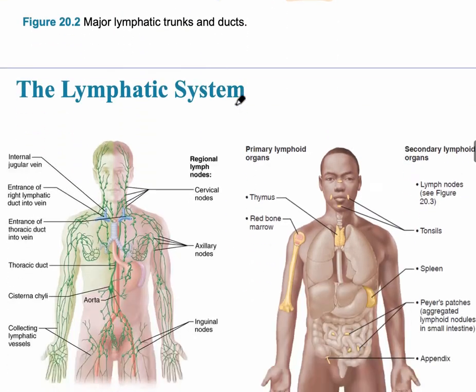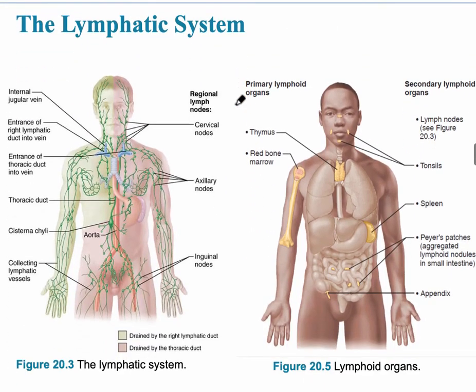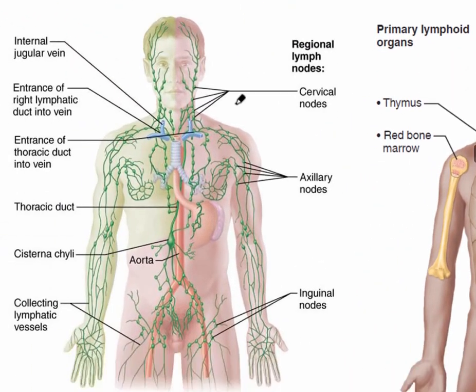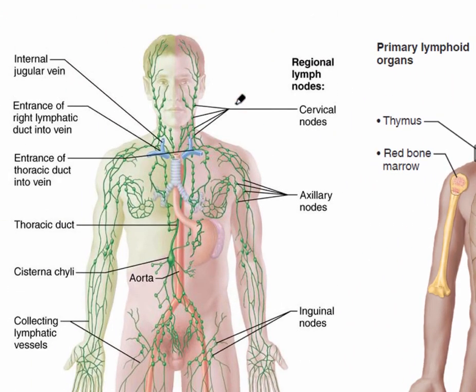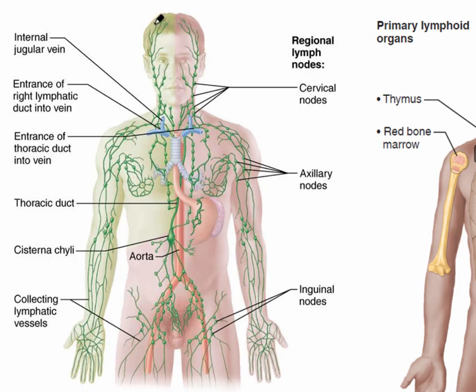This diagram shows where the lymph enters and which duct it goes into. Everything on the right side of the image — shown in light green — includes the right side of the head, the right thorax, and the right arm.